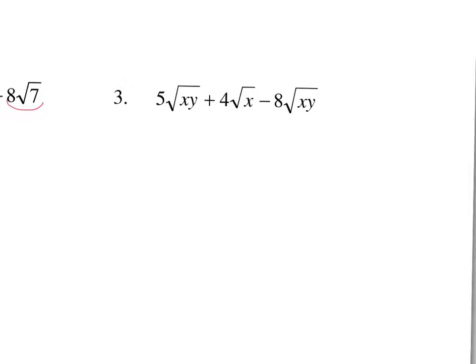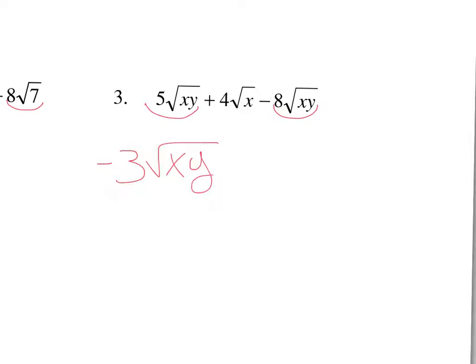On number three I'm looking for the like radicals. This term and this term both have the square root of xy, so those are like radicals and I'm going to add those coefficients. 5 plus negative 8 is negative 3 square root of xy, and this remaining term has nothing to add to so it's just going to tack on to the back.